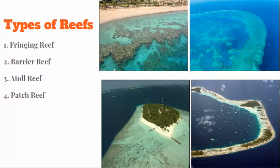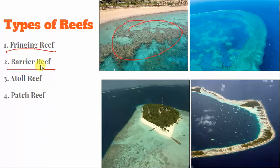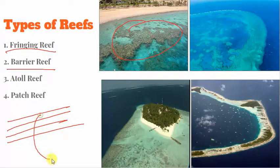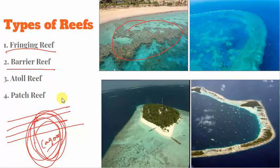Now let's talk about the different types of reefs. The first is a fringing reef, which grows out from the land and is connected to it — it starts to grow from the land and connects into the ocean. The next is a barrier reef, which is separated from land by a lagoon. A lagoon is a part of the sea which is cut off from the rest of the sea — it's like a pond separated from the sea. A reef formed in these kinds of lagoons, separated from land, is called a barrier reef.